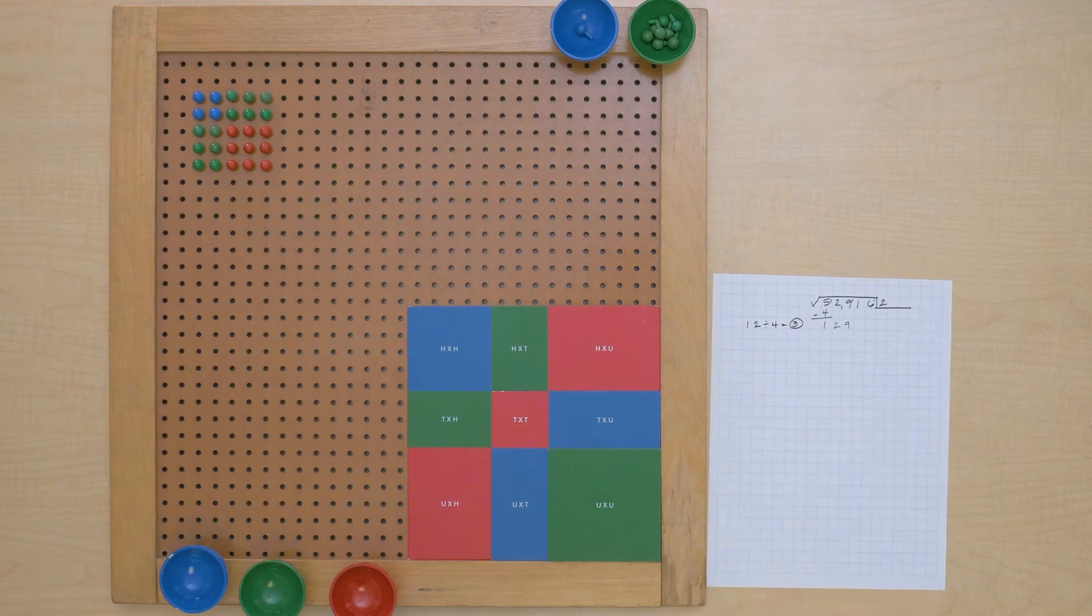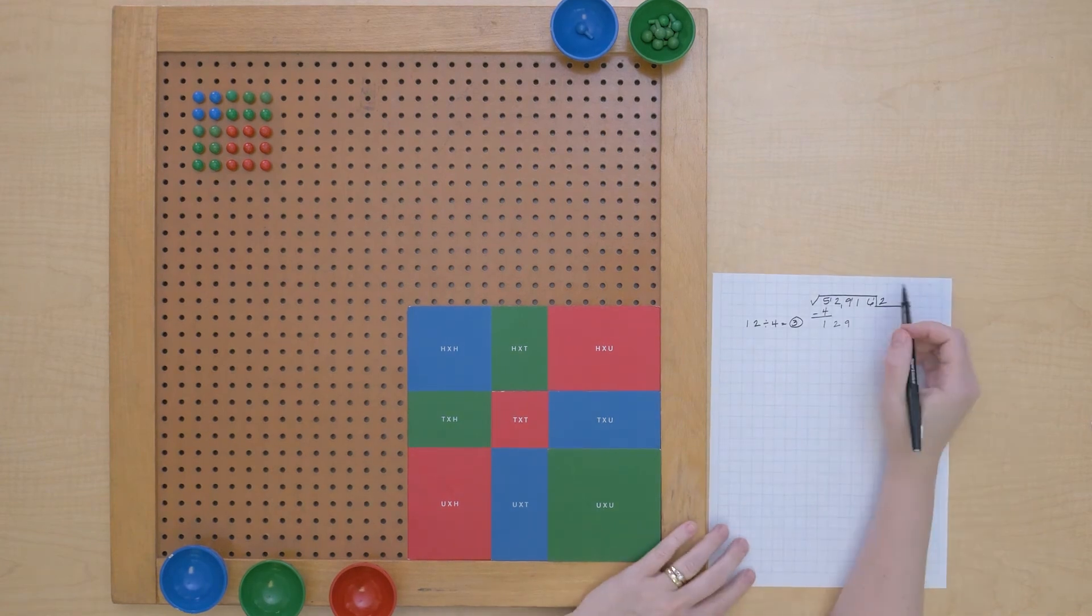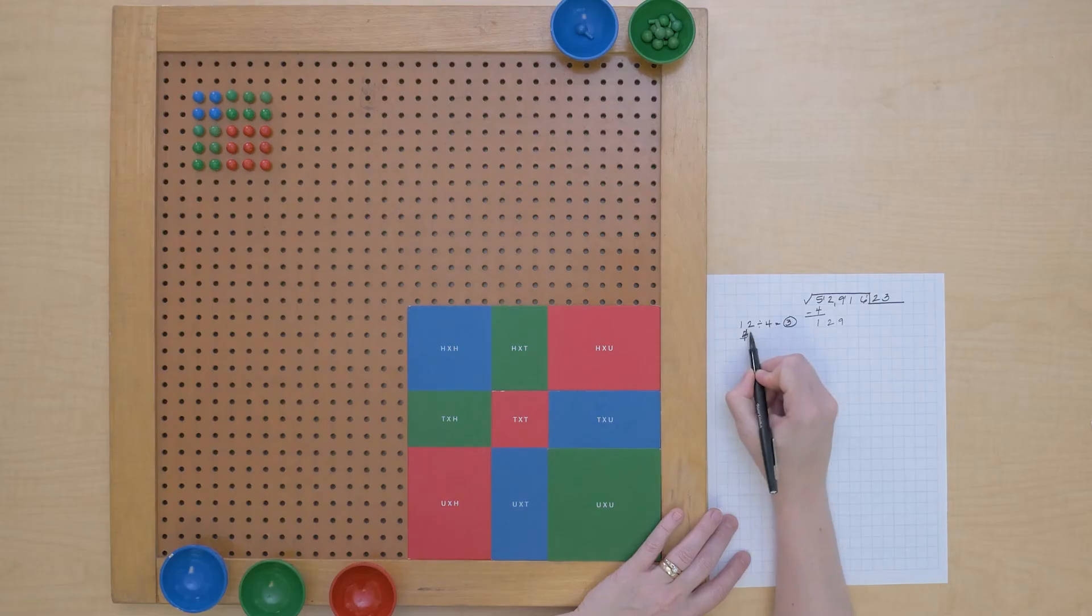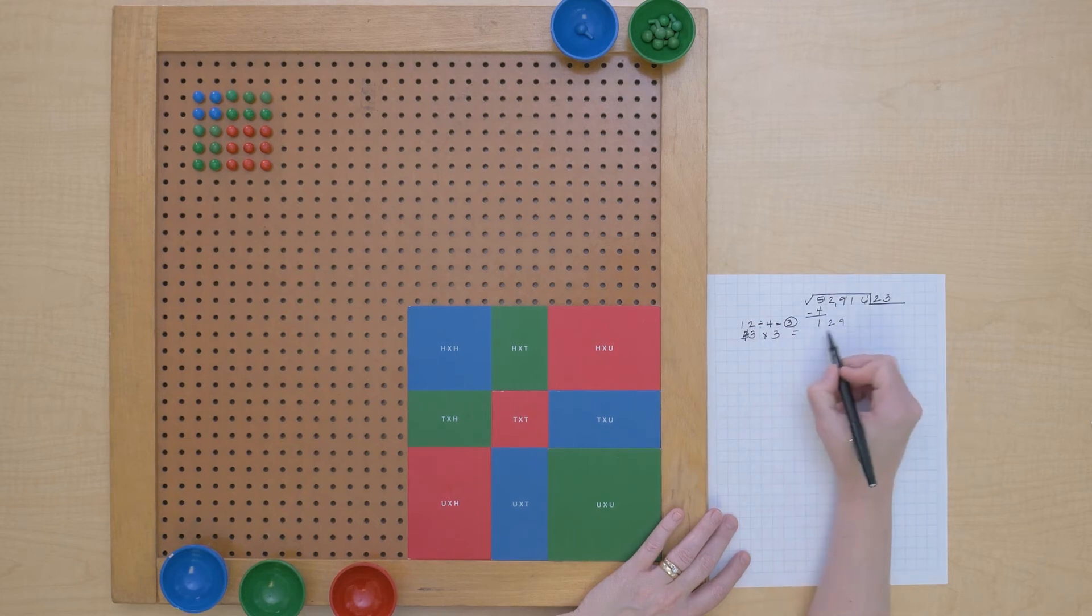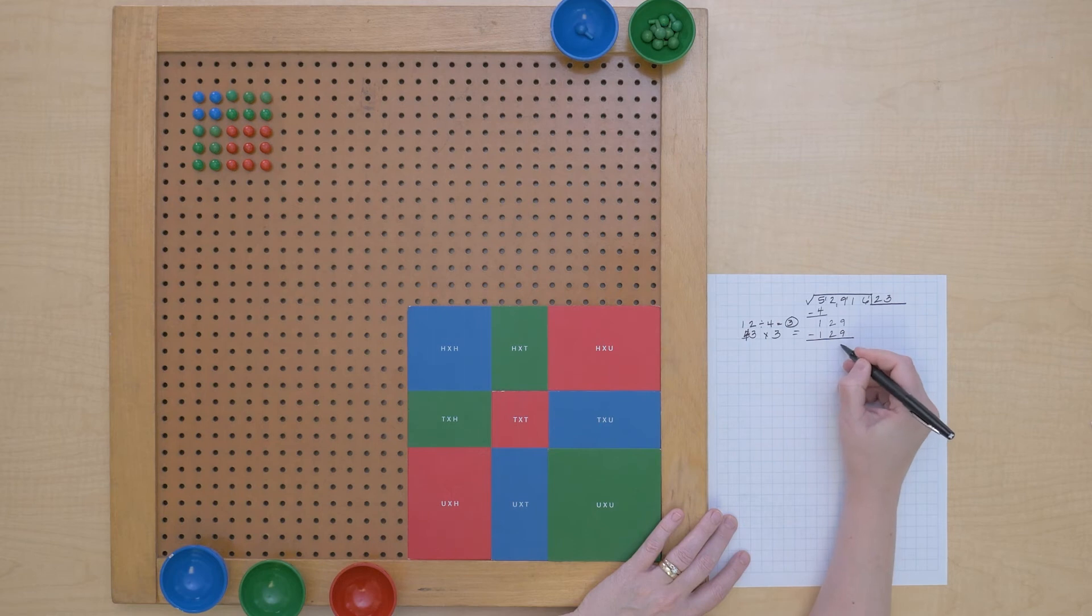Looks like we were right. Let's take a look. It was 3. So let's find out how much we used. The divisor 43 times 3 equals 129. We used all of it.